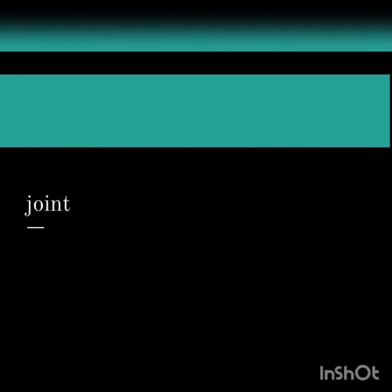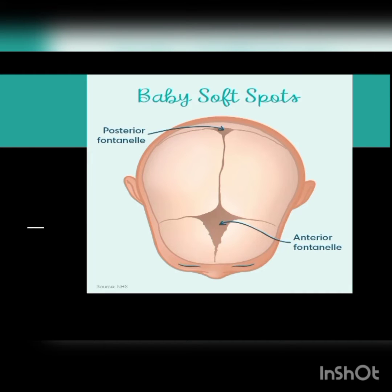Fontanelle can be seen in newborns. There are two fontanelles mainly: the posterior fontanelle and the anterior fontanelle. The posterior fontanelle is triangular in shape and the anterior fontanelle is diamond in shape. The posterior fontanelle closes at six weeks and the anterior fontanelle at 18 months.